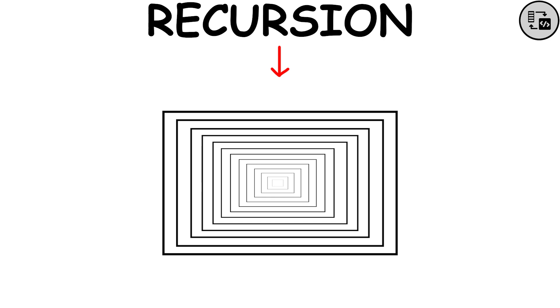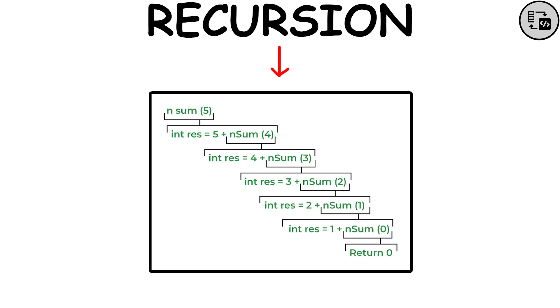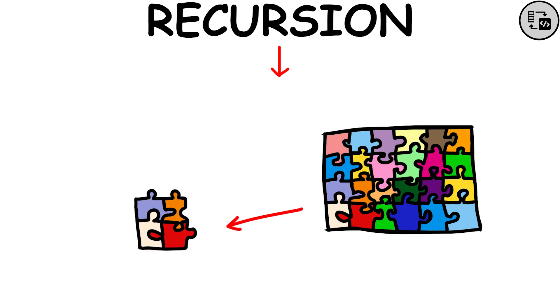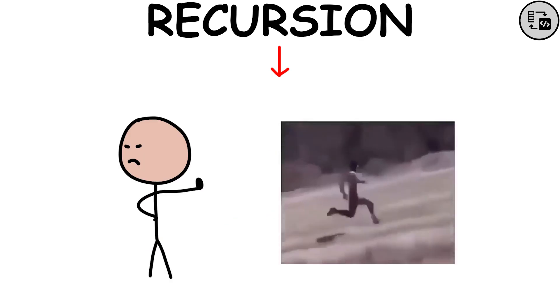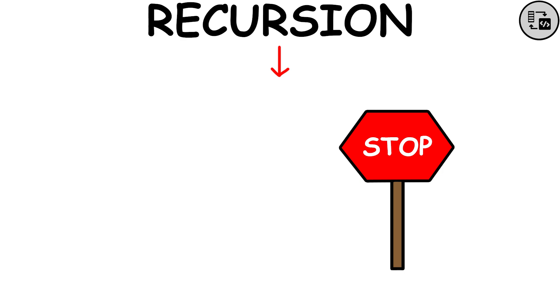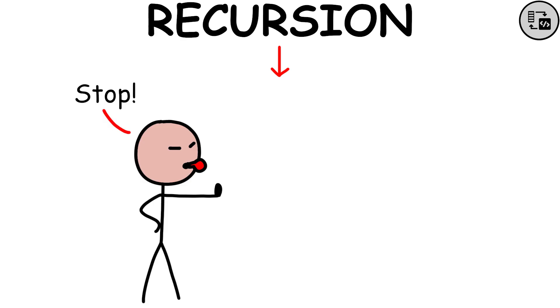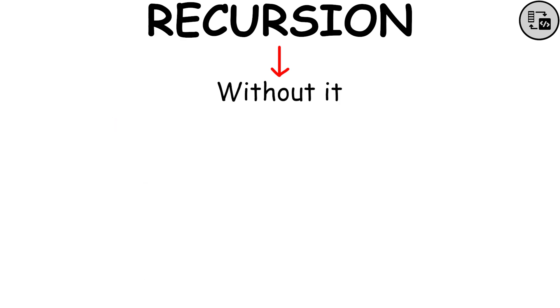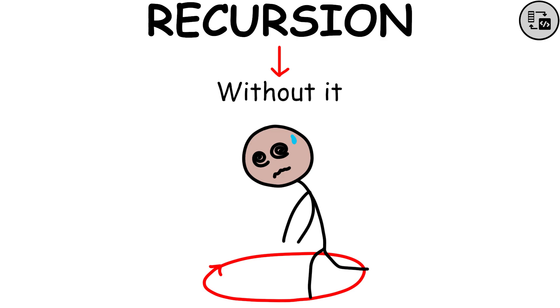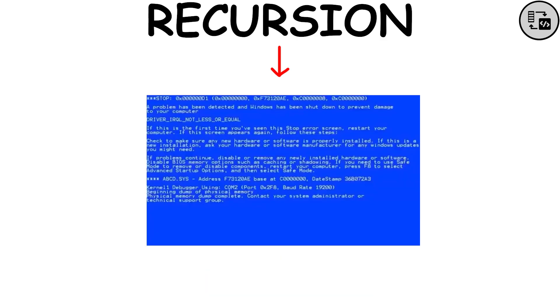Recursion is like a never-ending journey where you keep breaking a big problem into smaller pieces until it's easy to solve. It's like if you have a big puzzle, and you keep breaking it into smaller puzzles until each piece fits perfectly. But to avoid going on forever, you need a stopping point, like a base condition. It's like saying, stop when you get to this point. Without it, you could end up going around in circles forever, which is like when your computer runs out of memory and crashes.